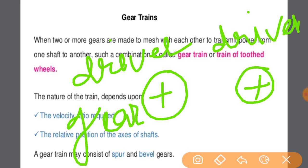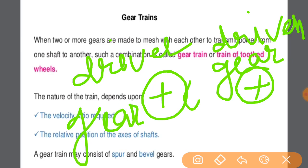For this purpose we use many kinds of Gear Trains. There are Simple Gear Train, Compound Gear Train, Devoted Gear Train, and Epicyclic Gear Train, and also Compound Epicyclic Gear Train. We will discuss all these Gear Trains one by one in this and further videos.